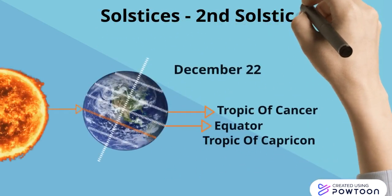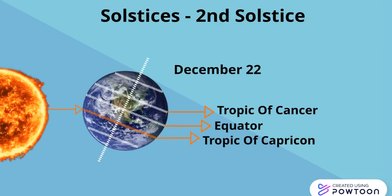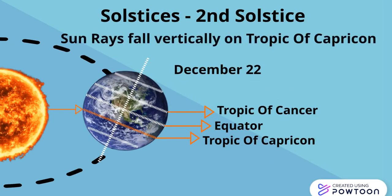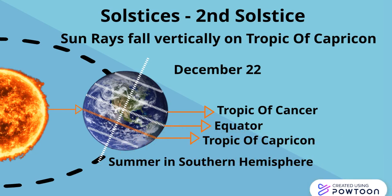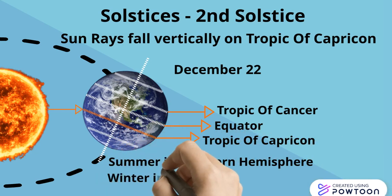Now let's talk in detail about the second solstice. As you can see in the figure, the sun rays fall vertically on the Tropic of Capricorn, which means the Tropic of Capricorn would be much hotter than the equator and the Tropic of Cancer. So it means that the Tropic of Capricorn, which is in the Southern Hemisphere, will face summer, while the Tropic of Cancer, in the Northern Hemisphere, will face winter.